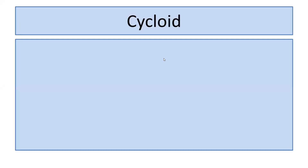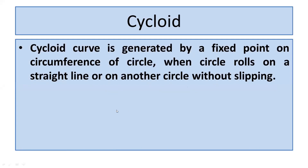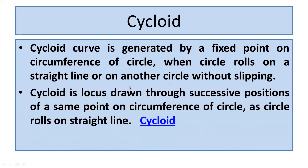First we will see what is the meaning of cycloid. The cycloid curve is generated by a fixed point on the circumference of a circle when the circle rolls on a straight line or on another circle without slip. So cycloid is basically the locus drawn through successive positions of the same point on the circumference of a circle as the circle rolls on a straight line or on another circle.